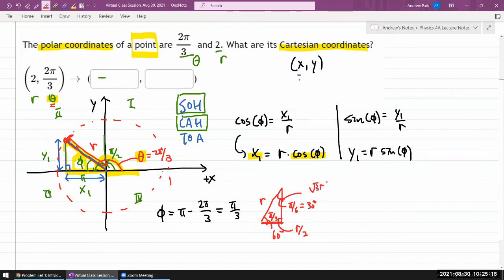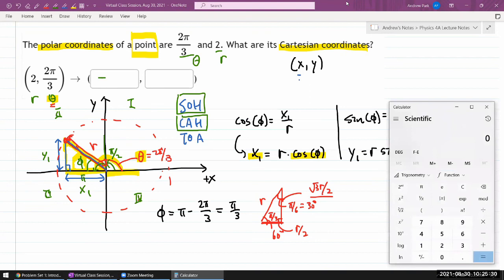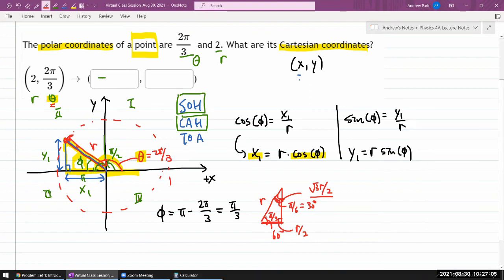If you have this memorized, great, or you can use scientific calculator to just do the trig functions. The r cosine of φ is going to be... what reminded me was looking at this figure, this is φ.